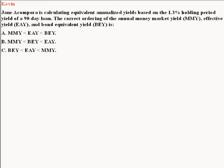Jane Acampora is calculating equivalent annualized yields based on the 1.3% holding period yield of a 90-day loan. The correct ordering of the Annual Money Market Yield (MMY), Effective Annual Yield (EAY), and Bond Equivalent Yield (BEY) is... We've been given three different options in terms of the order in which MMY, EAY, and BEY are to follow.